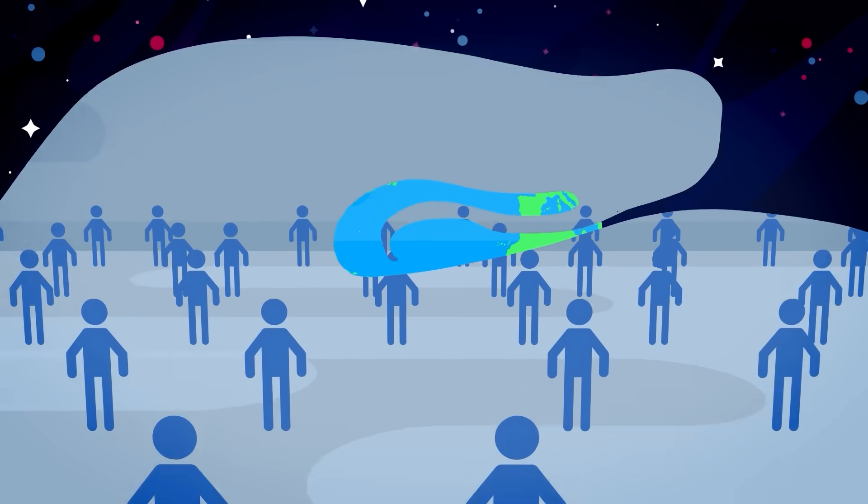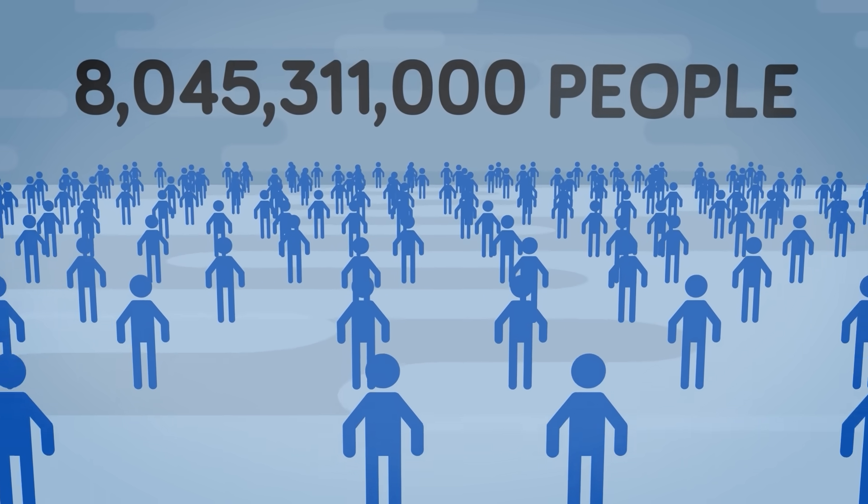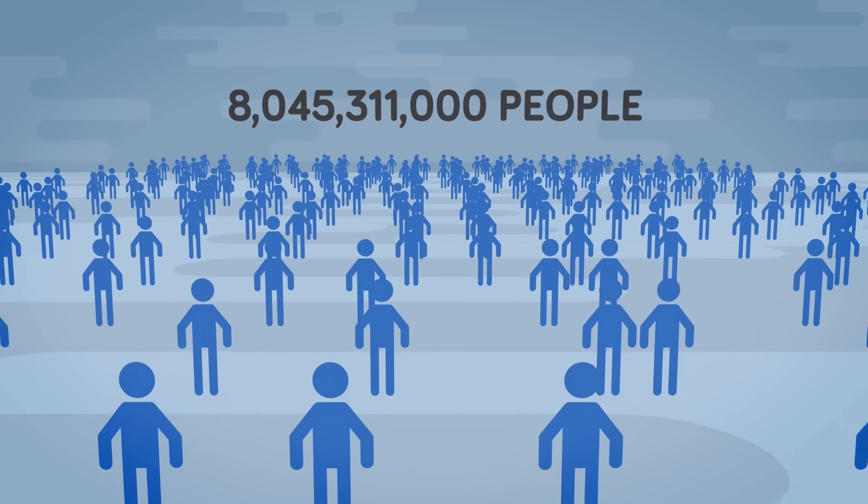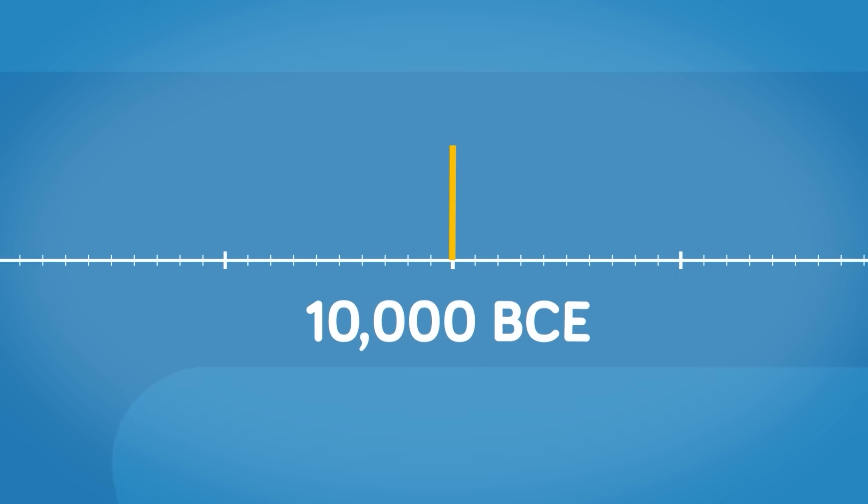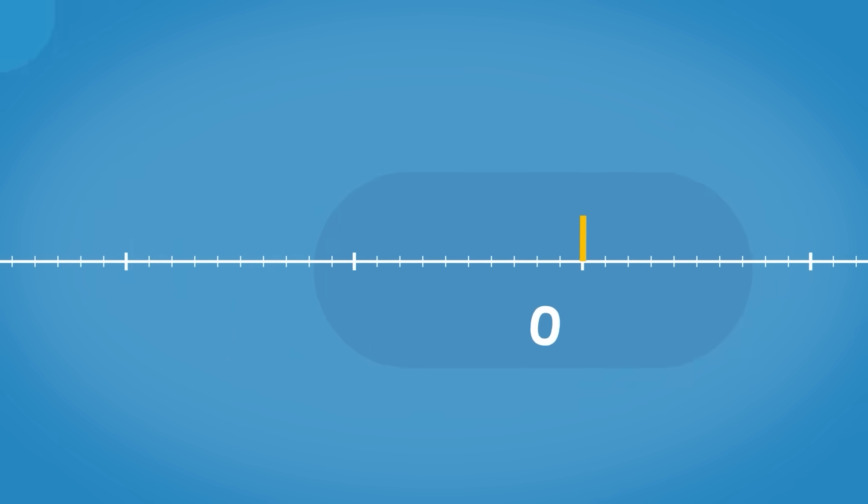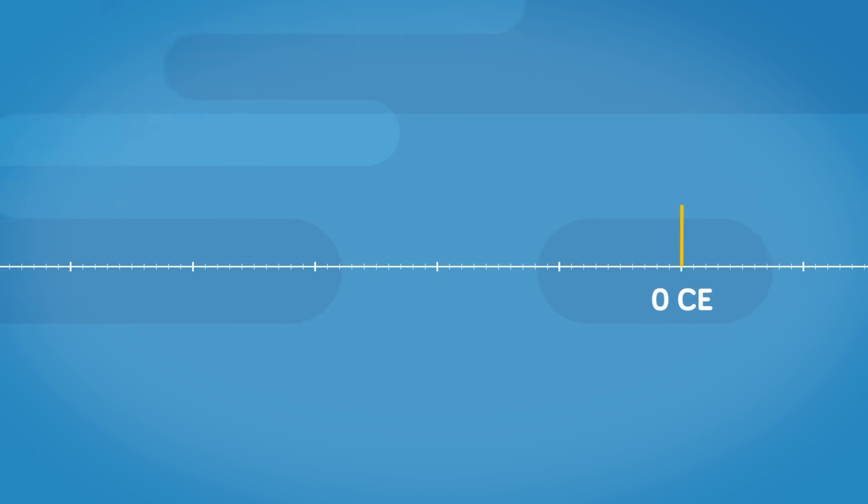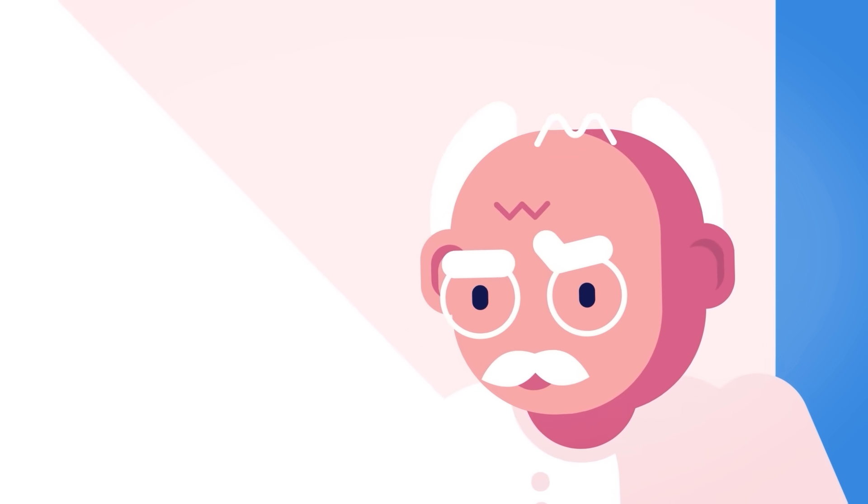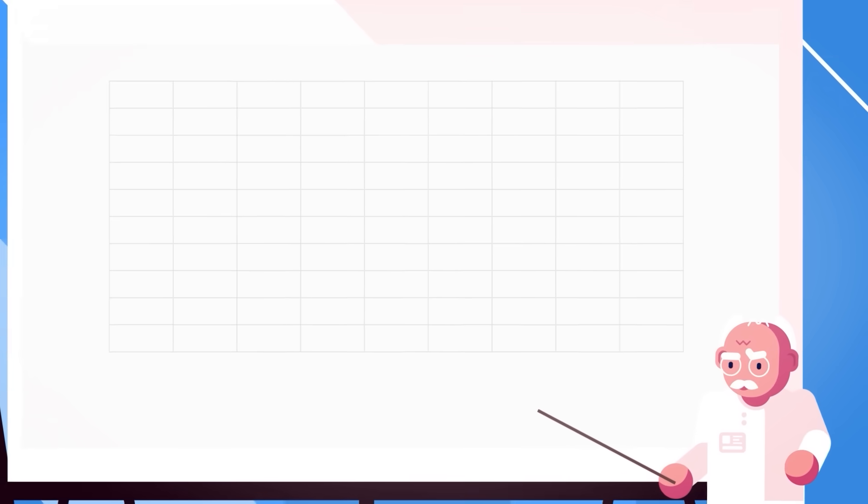As of right now, there are approximately 8,045,311,000 people on planet Earth. To put this into perspective, let's go back in time. Between 10,000 BCE and 0 CE, the human population grew from around 4 million to approximately 190 million people. By the year 1900, there were around 1.9 billion people on the planet, but this was when things got a little out of control.